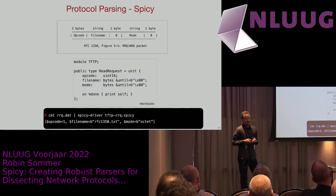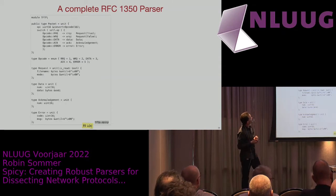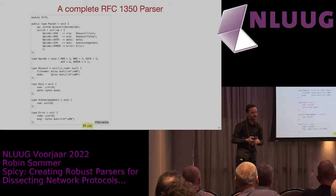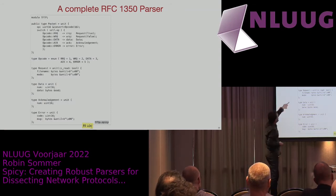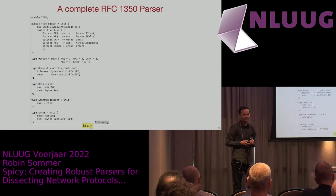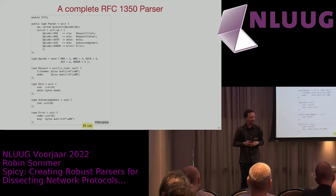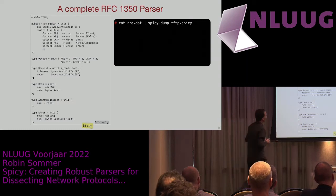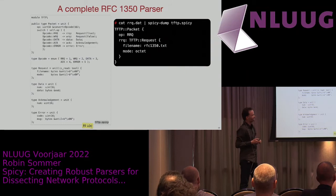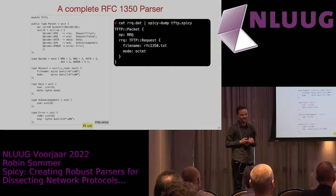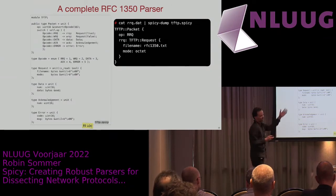We wrote essentially a parser without any C++ code here. This is the full TFTP protocol — not only the read request, but all five opcodes. The request structure is shared between read and write requests. This is SPICY code for parsing all of TFTP: 35 lines of code. Compare that to the earlier Wireshark, TCPdump, and Zeek versions. We also have a tool called spicy-dump which gives you a JSON representation of what's being parsed. Taking this full grammar, piping in the same payload from the read request, it dumps all the fields as parsed. This shows that programmatically you have access to all the fields being parsed, so the host application like Zeek can do something with that information.